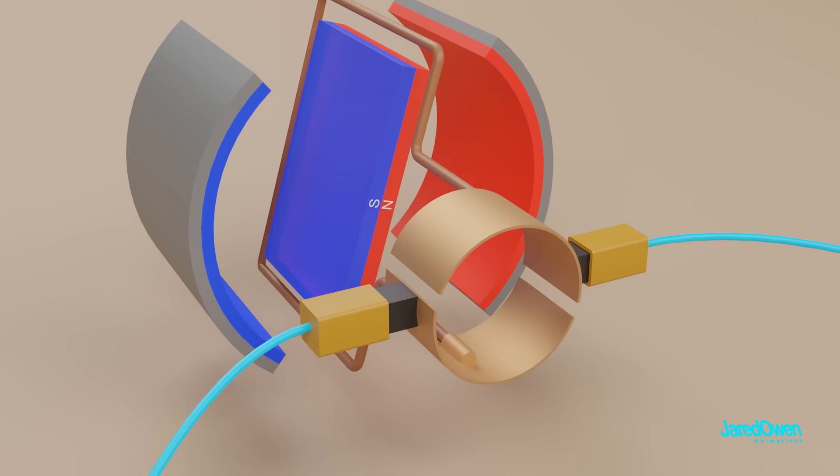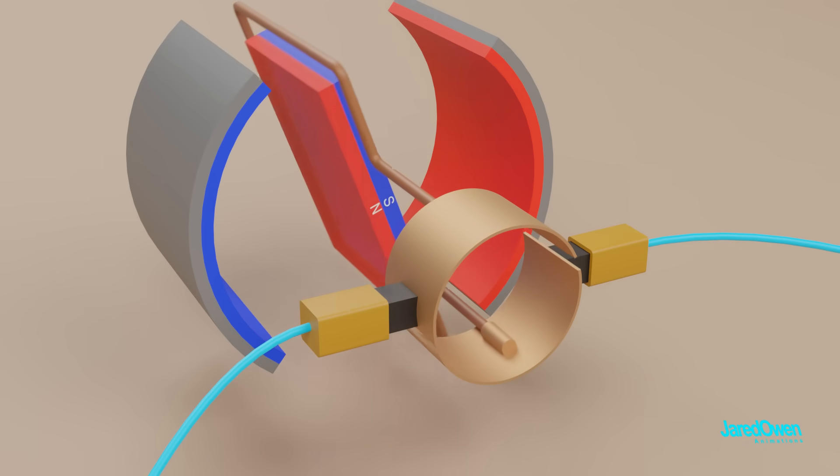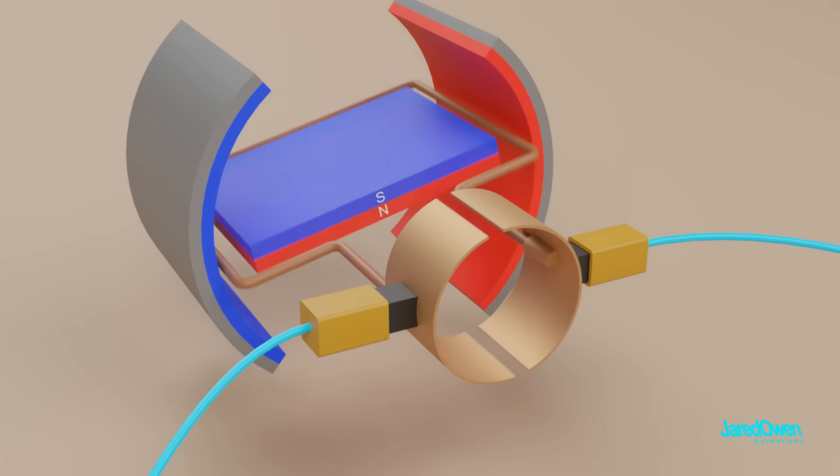This means the electromagnet switches polarity, which will cause the armature to keep spinning. This commutator ring does the same thing as switching the wires like we were doing before. But this time, it does it all on its own.